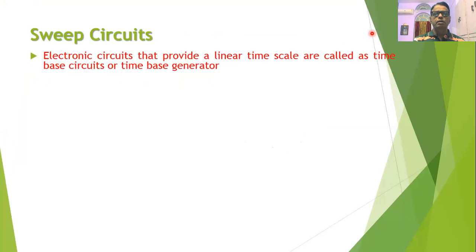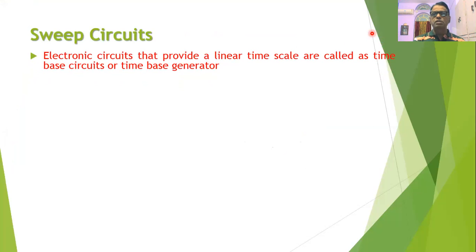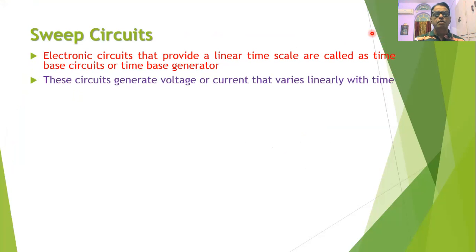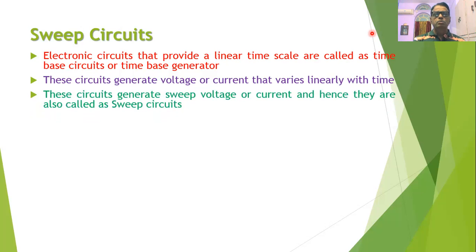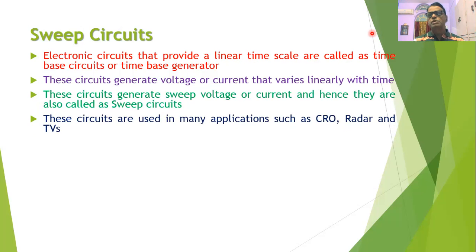What do we mean by sweep circuits? These are electronic circuits that provide a linear time scale — the voltage or current generated will increase linearly with time. These circuits are called sweep circuits or time-based generator circuits. The voltage generated is called the sweep voltage or sweep current.